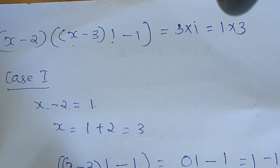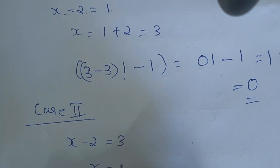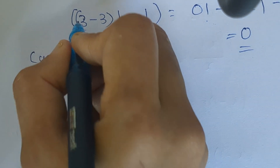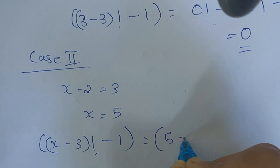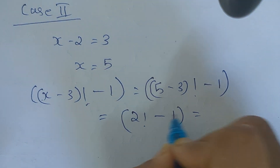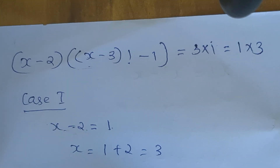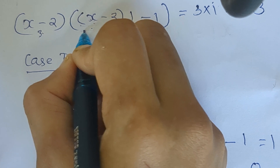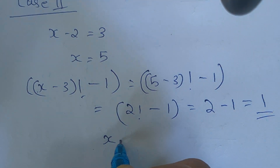Case 2: x-2 = 3, so x = 5. Let's verify by substituting x = 5 into (x-3)! - 1: that is (5-3)! - 1 = 2! - 1 = 2 - 1 = 1. So (x-2) × [(x-3)! - 1] = 3 × 1 = 3. This satisfies the equation. Therefore x = 5.